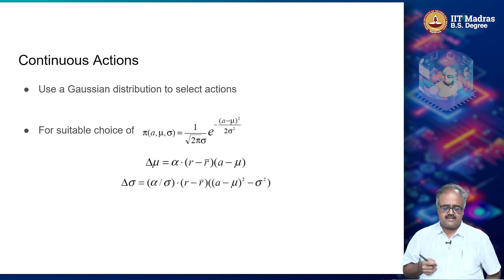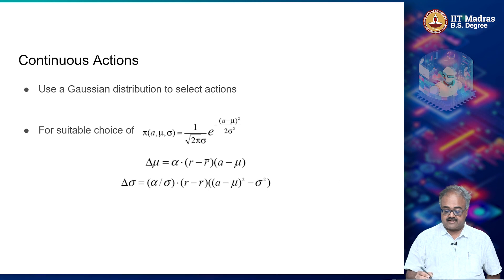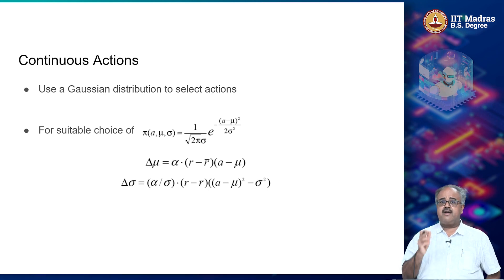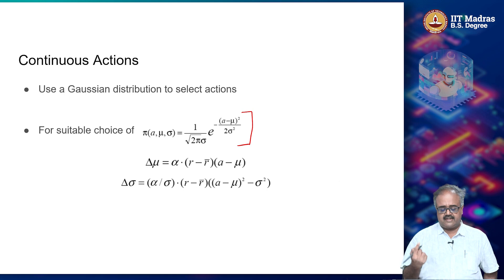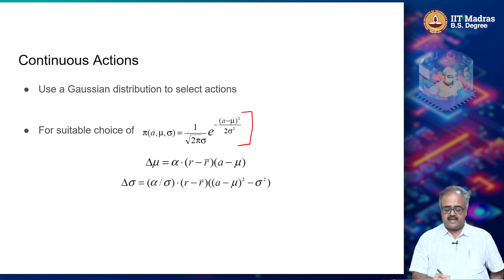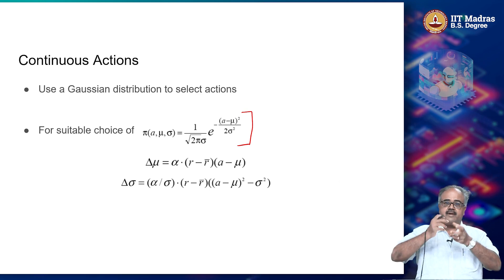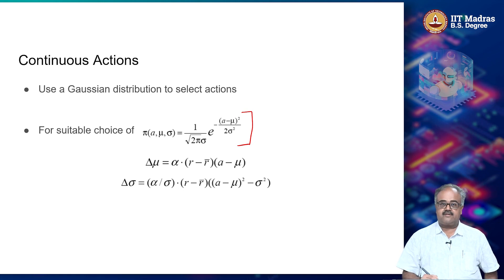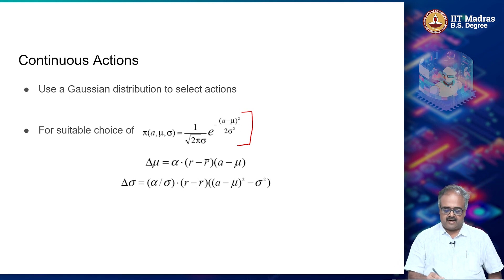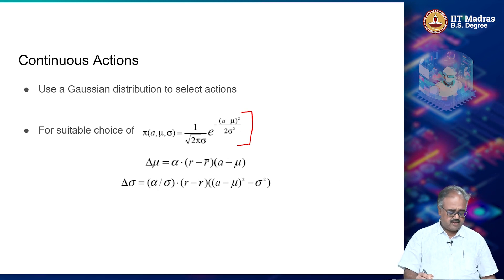Now for continuous actions: when you have continuous actions, you use a mean μ and standard deviation σ and a Gaussian distribution — a univariate Gaussian in this single-action case. With a suitable choice of alpha and other settings, I can write down the update rules. The update for μ involves (a − μ) plus other terms, including a sigma-squared term from taking the derivative.